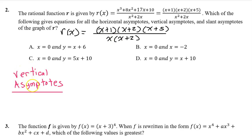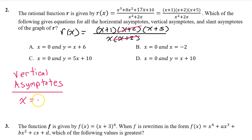Vertical asymptotes come from factors in the denominator that do not get cancelled out. The factor of x plus 2 does get cancelled out, so that will not lead to a vertical asymptote — it gives us a hole at x equals negative 2. But we have this surviving factor of x. Setting that equal to 0 gives us a vertical asymptote of x equals 0.